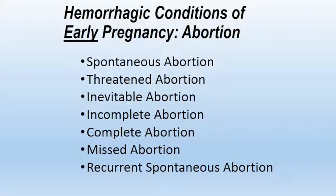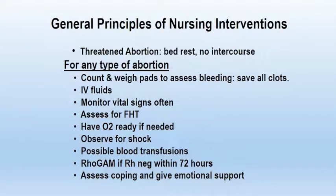There are a variety of types of abortions and we're going to go through all of them. The general principles related to nursing care include rest for a threatened abortion, although this has not been proven to really make a difference in the outcome, but certainly no intercourse because it causes the uterus to contract. For all types of abortion, the bleeding is a threatened miscarriage, but we term it abortion. We want to count and weigh the pads, and if there are any clots that are expelled, you need to keep them because there may be products of conception within.